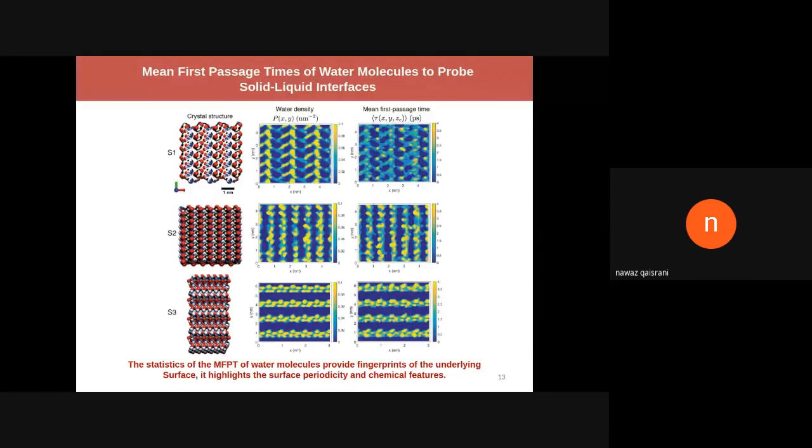The conclusion is that the statistics of the MFPT, the mean first passage time of water molecules, can provide fingerprints of the underlying surface, its periodicity and chemistry. There is much more to look at. For example, in this work we only did 1D and 2D escape of water, but one can also look at first passage time in a cage or sphere.